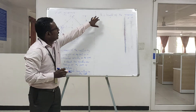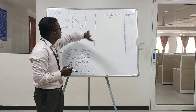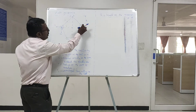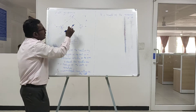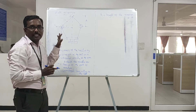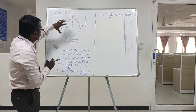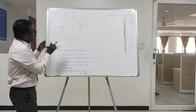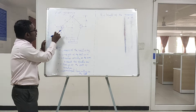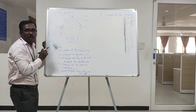The next important term in the Watt governor is H. H means the height of the governor, which is the distance between the center of the ball and the pivoted axis T. Now, due to these three forces — that is weight of the ball, centrifugal force Fc, and the tension in the arm —